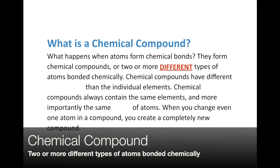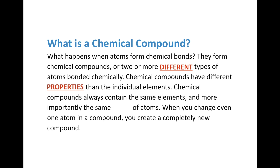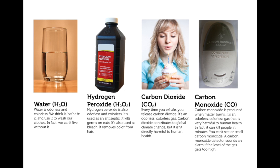Chemical compounds tend to have different properties than the individual elements. Chemical compounds always contain the same elements and, more importantly, the same ratio of atoms. For instance, water is always H2O — always two hydrogen atoms and one oxygen atom. If you change even one atom in the compound, you completely create a new and different compound with different properties. For example, H2O — water — is odorless and colorless. Add one oxygen atom and we have hydrogen peroxide, which is also odorless and colorless, but it's poisonous.